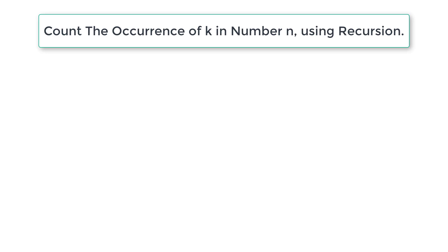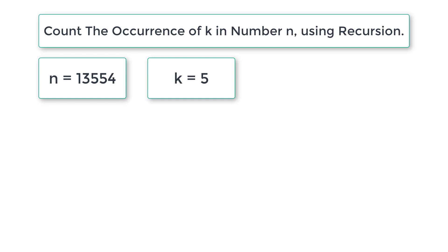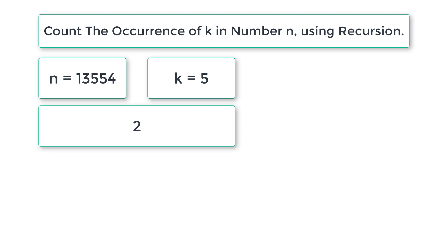Let's write a C program to count the number of occurrences of a digit, we call it k, in number n using recursion. If the user enters n as 13554 and k as 5, our program needs to check this number for occurrences of 5. We have 5 two times — at the 10th place and the 100th place — so 2 should be the output.